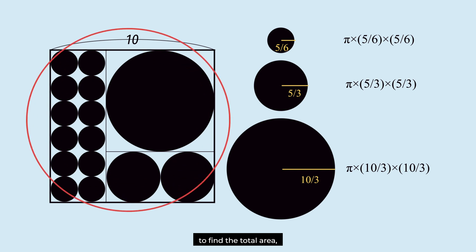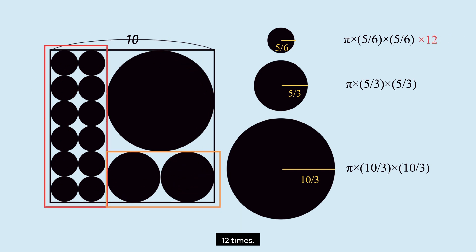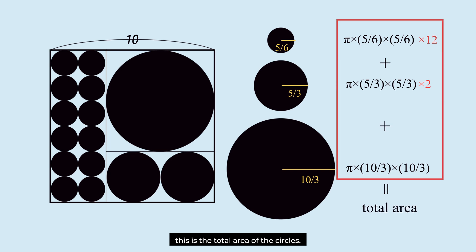To find the total area, we multiply by the number of circles, 12 times 2 times. Out of all these values, this is the total area of the circles.